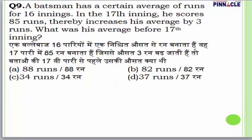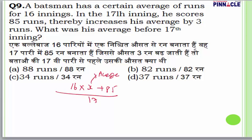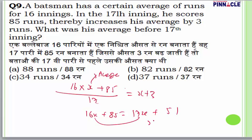Question number 9: A batsman has a certain average for 16 innings. In the 17th innings he scored 85 runs and his average increased by 3. Let initial average = x. Total after 17 innings = 16x + 85, divided by 17 = x+3. So 16x + 85 = 17x + 51, giving x = 34. Initial average was 34.